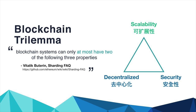Let's start off with some basics. Why are blockchains so slow? You've probably heard of the blockchain trilemma, where Vitalik famously said blockchain systems can only have at most two of the following three properties: scalability, decentralization, and security. You can only have two, not the third.